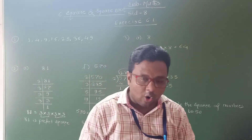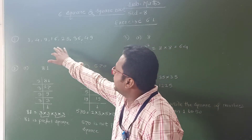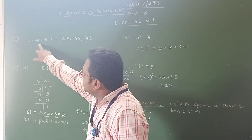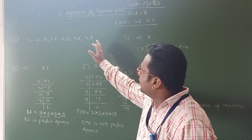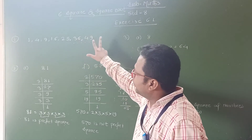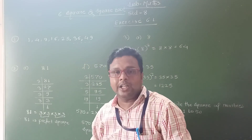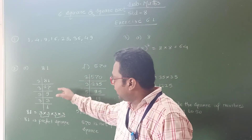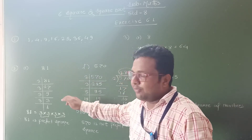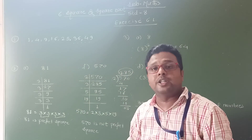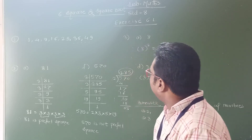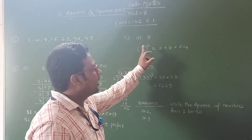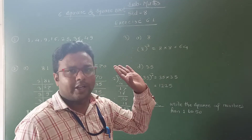I hope students you understand all these questions. In question number 1, a pattern was given and we had to find the next two numbers. We found all the numbers are perfect squares and then found the next two perfect square numbers, 36 and 49. In question number 2, we identified which numbers are perfect squares or not by finding their prime factors. In question number 3, we found the square of a number by multiplying it 2 times.